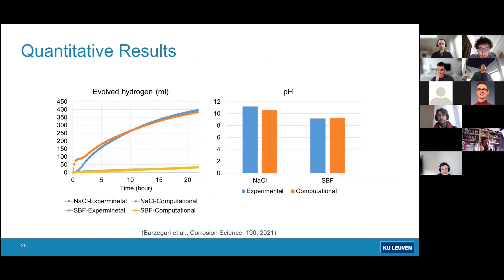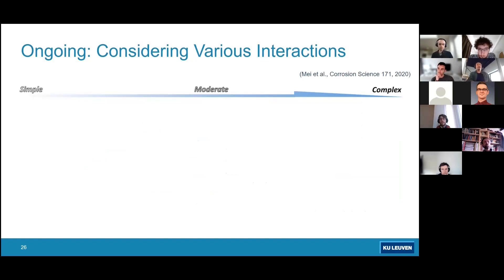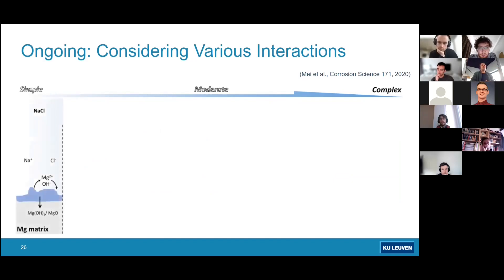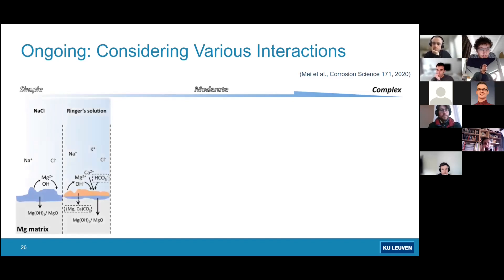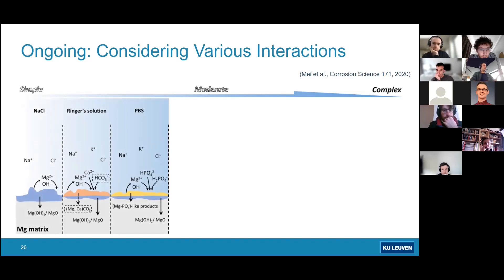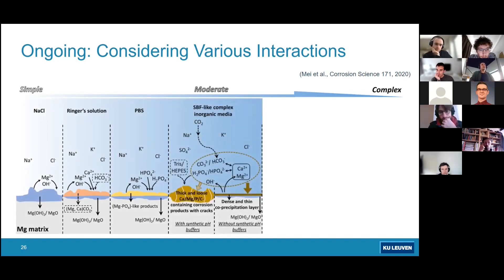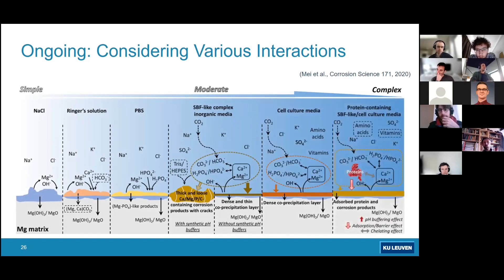Ongoing work, taking advantage of computing resources at the Computational Science Lab at the University of Amsterdam, aims to consider more complex chemical interactions. For a simple saline solution there are already many ions to track; as the solution becomes more complex with additional components, the protective surface layer composition becomes more complex too. Adding cell culture conditions, proteins, cells, and in vivo situations increases the complexity further — and more advanced models can come every day.